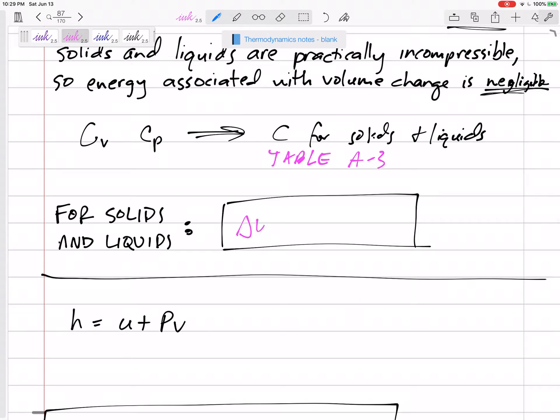Then the delta u is C at the average temperature. If we have a range of temperatures, we probably will only have one temperature value, so just take the C from the table times delta T to get delta u. Capital would be mC delta T.